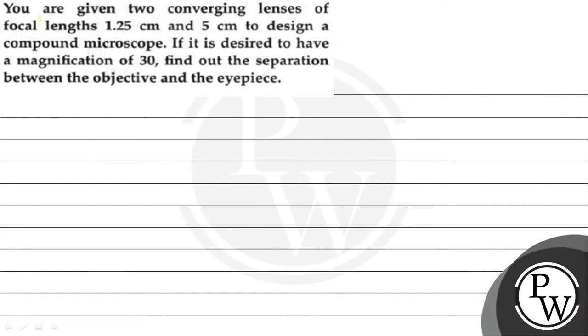Hello Bacho, let us read the question. You are given two converging lenses of focal length 1.25 cm and 5 cm to design a compound microscope. If it is desired to have a magnification of 30, find out the separation between the objective and the eyepiece.